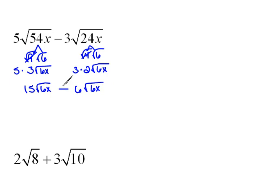Now we can subtract them. We can combine those because they have the exact same radicand. So if we have 15 minus 6 of those, then that would be 9 of those radical 6x's. So that's how we would combine it.